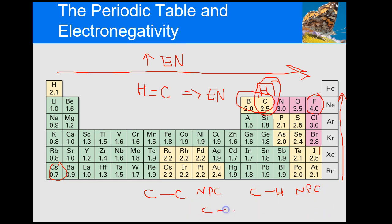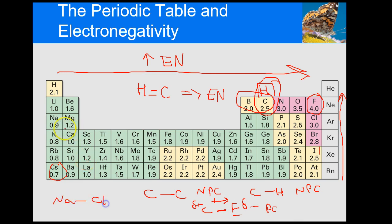Now carbon attached to fluorine — fluorine is much more electronegative than carbon, so fluorine pulls the electrons more towards itself. You get a partial negative on the fluorine and a partial positive on the carbon, making this a polar covalent bond. Last example: sodium attached to chlorine. Sodium is way to the left, chlorine is way to the right on the periodic table. The electronegativity difference is about 2.1, so chlorine just rips the electrons away, forming a full negative and positive charge — that's an ionic bond.